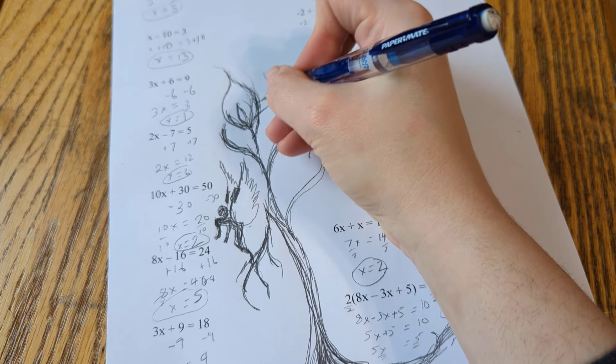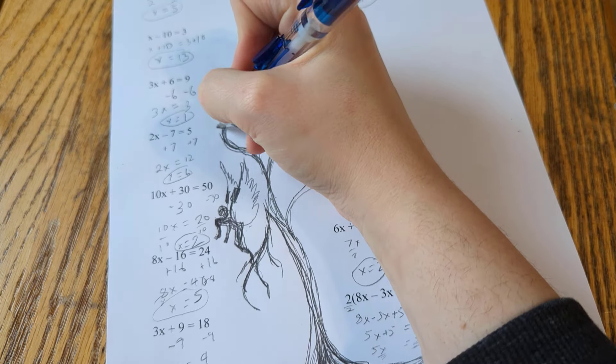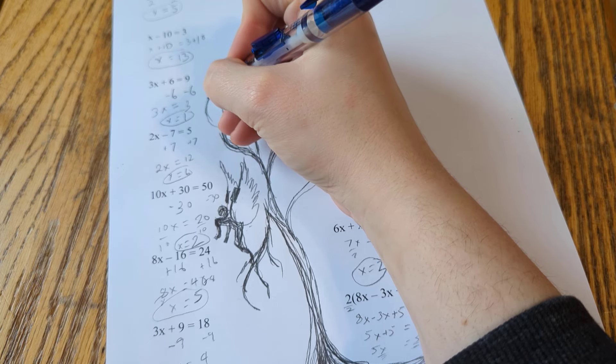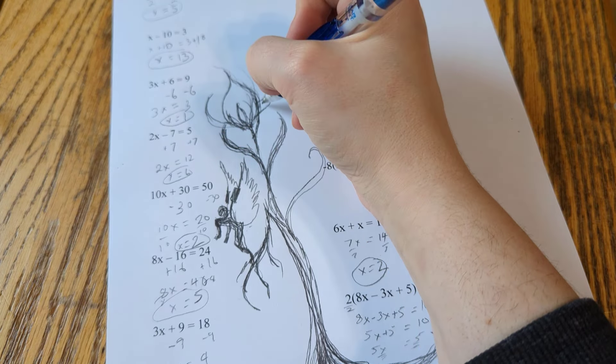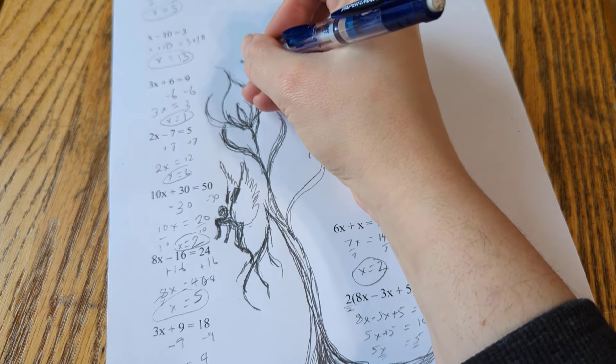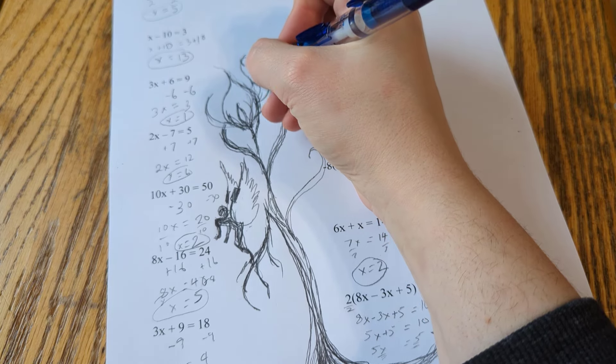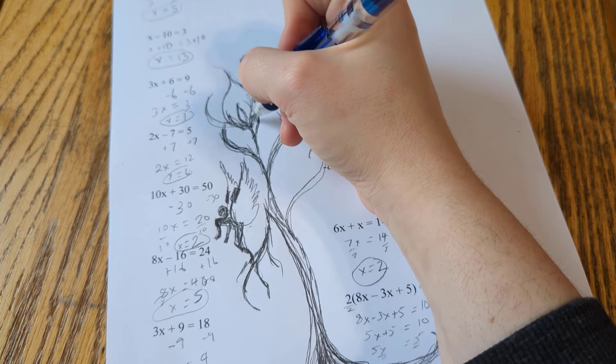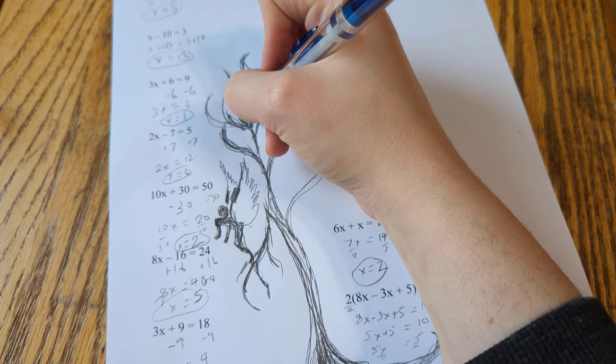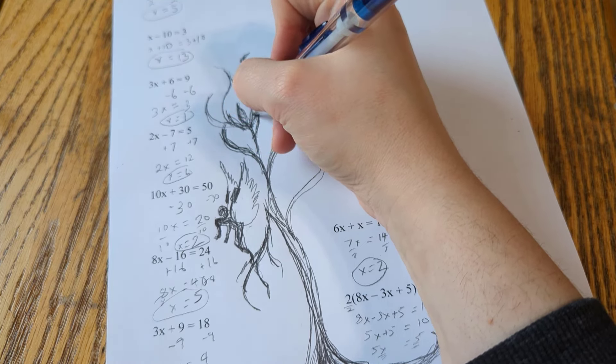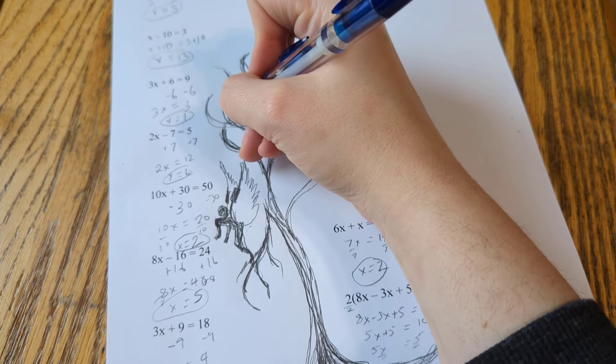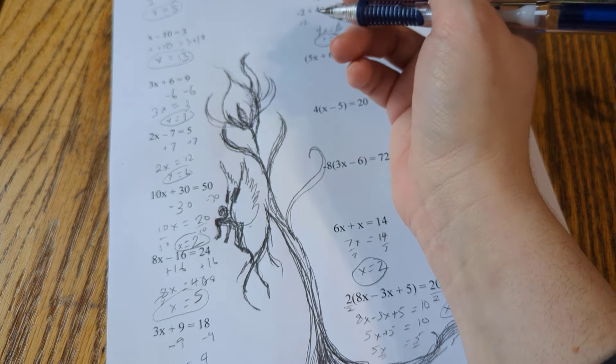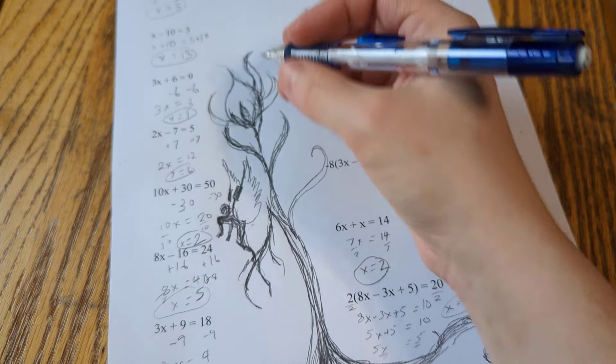3x plus 9 equals 18. So we're feeling pretty confident. Yeah, it's fun, right? It's just a little trick that you need to ladder. Okay, what do we do here first? Correct.